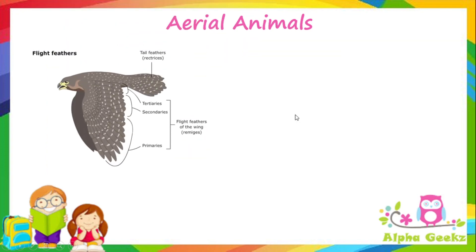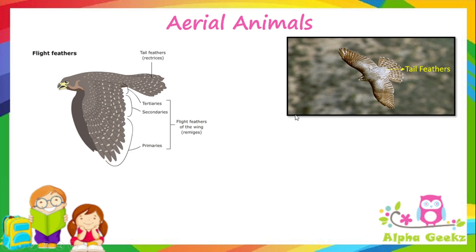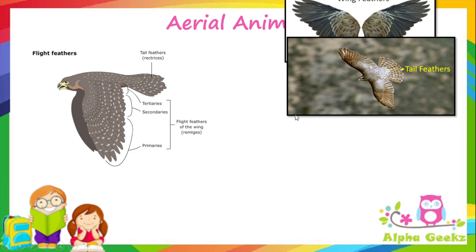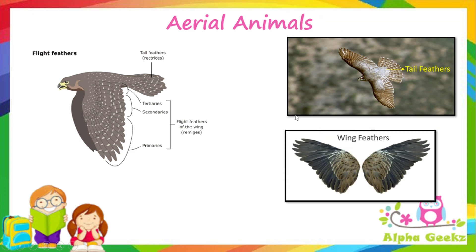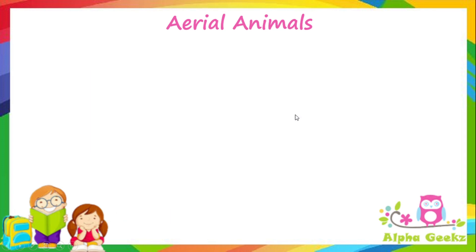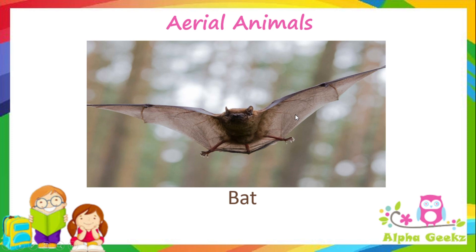The feathers on the tail and wings used to fly are called flight feathers. Tail feathers help to change direction while flying, and wing feathers help to support the bird during flight. Bats are mammals with the ability to fly. Their wings are not true wings but skin stretched between their toes, like the cloth in an open umbrella.